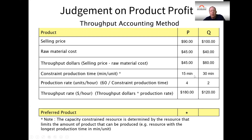Then we need to look at the flow rate. It takes 15 minutes to produce P and 30 minutes to produce Q, which means I can produce four units per hour of P and only two per hour of Q. Taking the value added times the flow rate: $45 × 4 = $180 per hour for P, versus $120 per hour for Q. That explains why changing the mix and focusing on product P yields much better profitability — from a throughput perspective, product P is actually the preferred product.